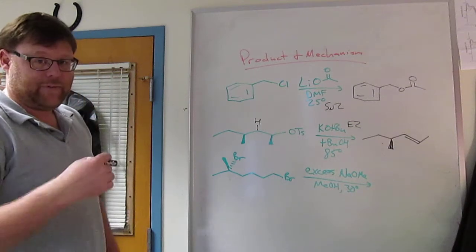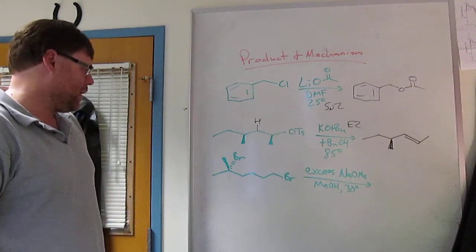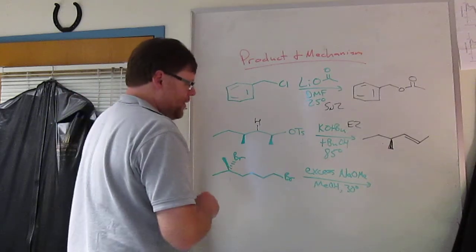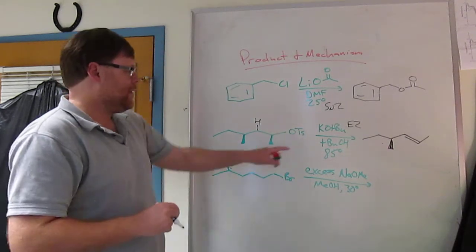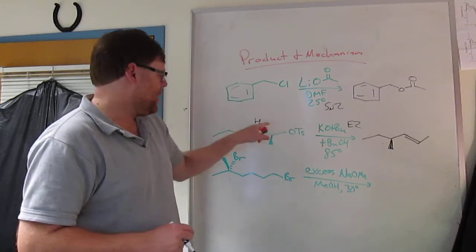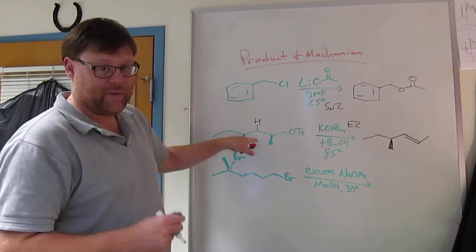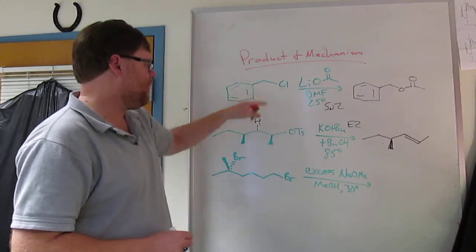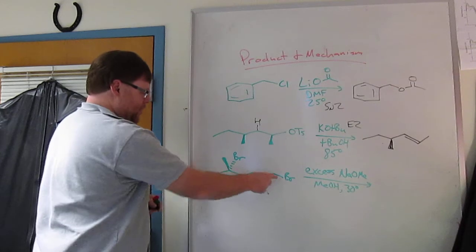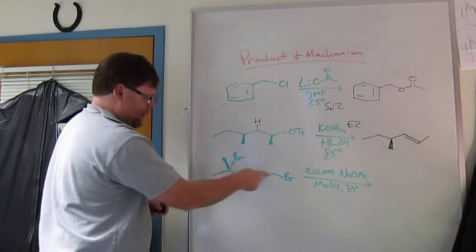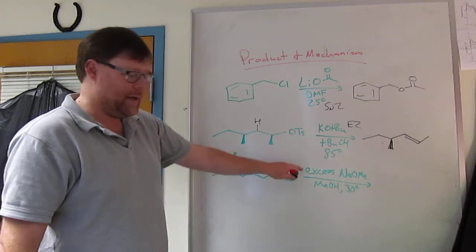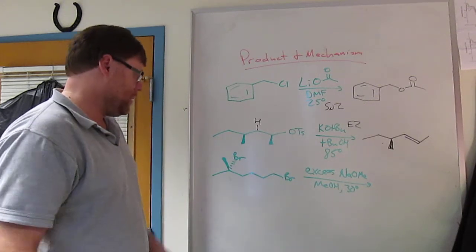Okay. If you haven't done the bottom one, hit pause. Go work it now. Okay. So we have excess sodium methoxide. So again, if you think about this, we need one t-butoxide for every tosylate, one acetate for every chloride. On the bottom, we have two leaving groups, tertiary bromide, primary bromide. And so if you're going to react both of them, you need an excess.